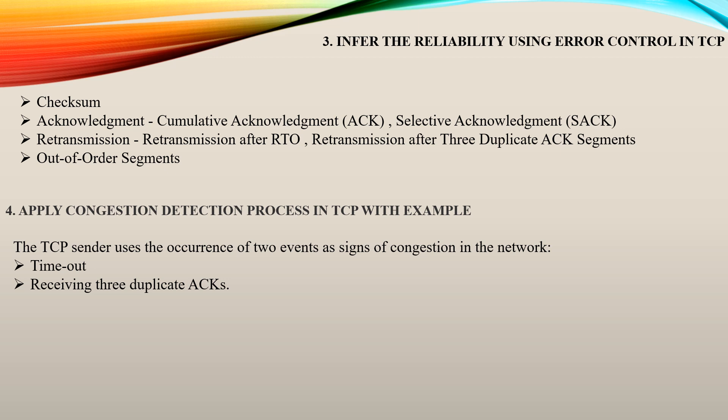Next question: apply the congestion detection process in TCP with an example. Congestion is detected by two methods: timeout and receiving three duplicate acknowledgements. If segments of data are missed and three duplicate acknowledgements are received, it indicates congestion causing data loss. For timeout, if a segment is sent with an expected delivery of 10 milliseconds but takes longer, it is called a timeout and congestion is detected.